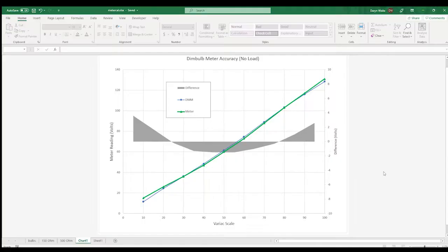So here's a plot of the data that compares my most accurate DMM reading and the dim bulb meter reading side-by-side. The x-axis is the scale on the Variac, the y-axis is AC volts. The blue line represents the DMM measurement as a function of Variac position and the green line is the dim bulb meter.